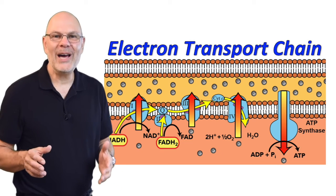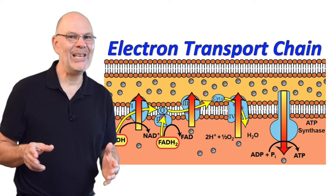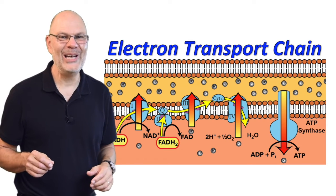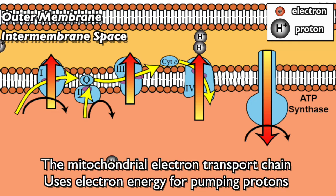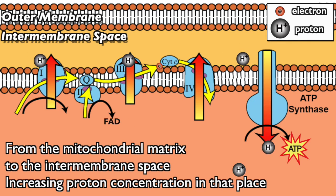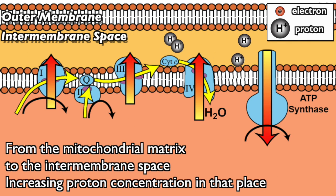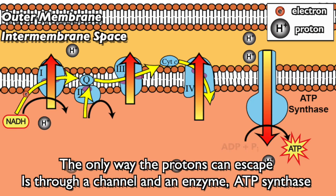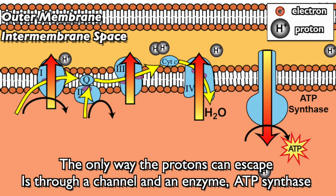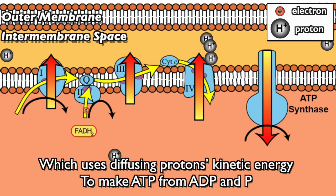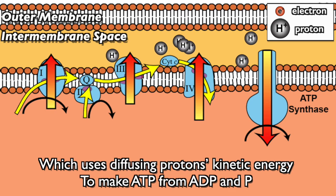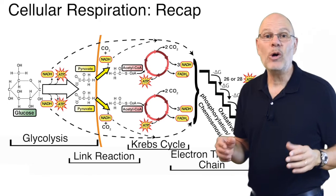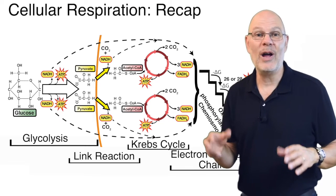The chorus of my electron transport chain song tells you almost everything you need to know about this process. The mitochondrial electron transport chain uses electron energy to pump protons from the mitochondrial matrix to the intermembrane space, increasing proton concentration in that place. The only way the protons can escape is through a channel and an enzyme — ATP synthase — which uses diffusing protons' kinetic energy to make ATP from ADP and phosphate.